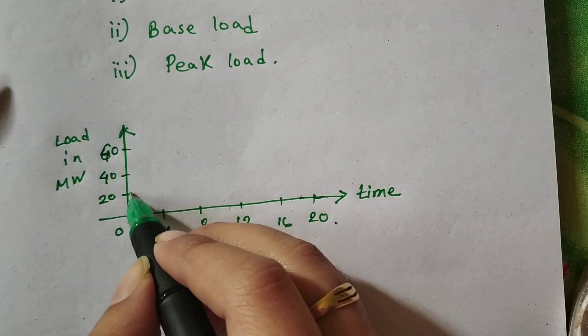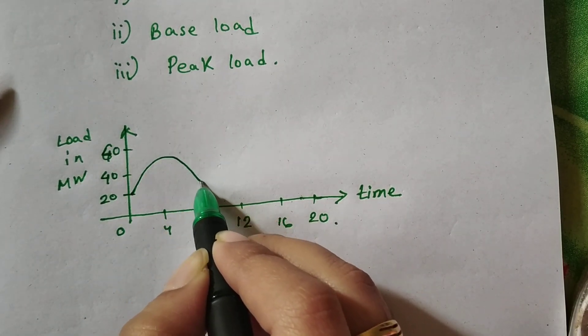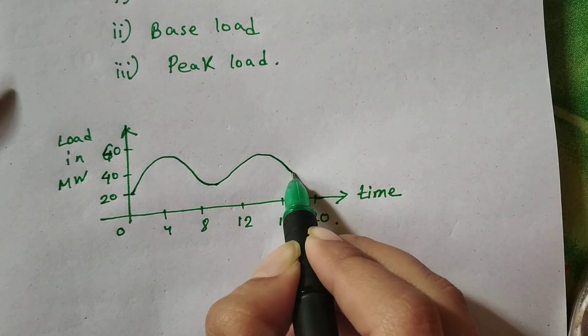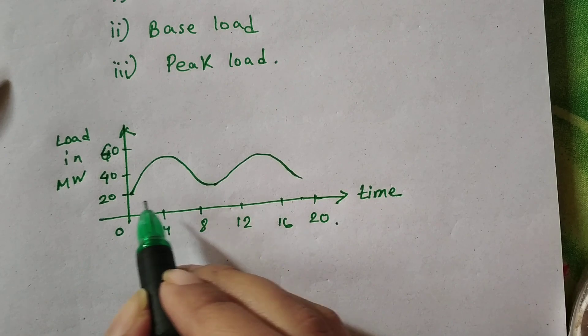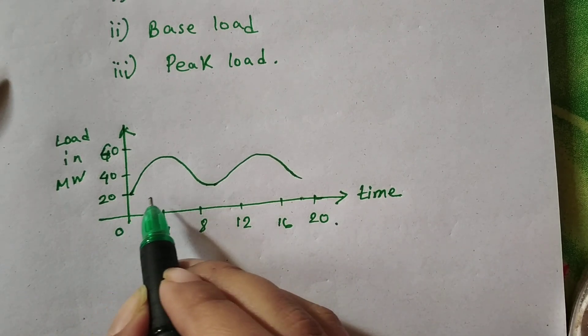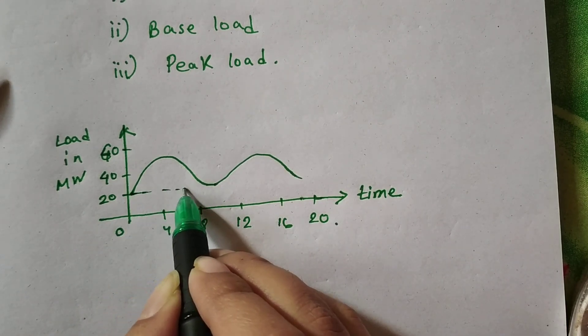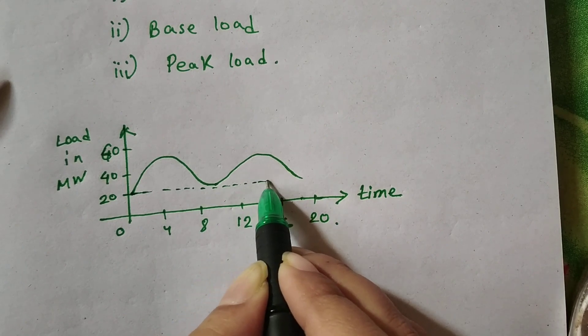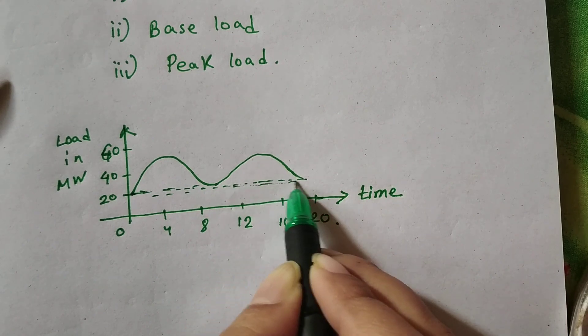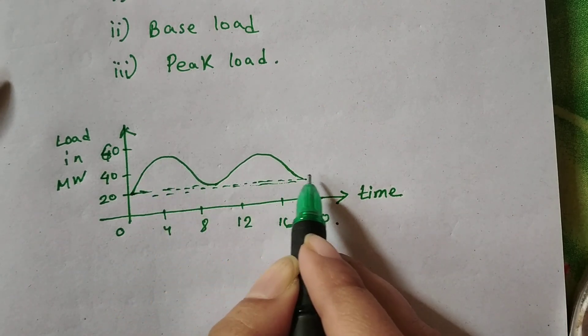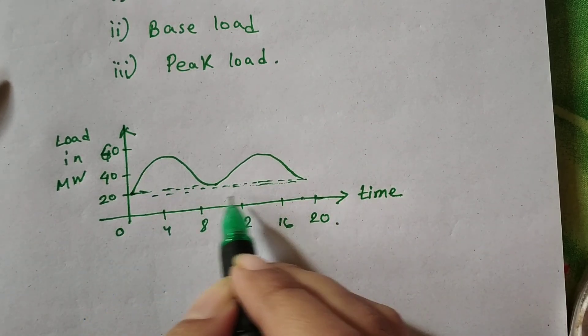Now draw a curve. This curve is called load curve. And you can see that below this dotted line, there is no curve passing through below this dotted line.